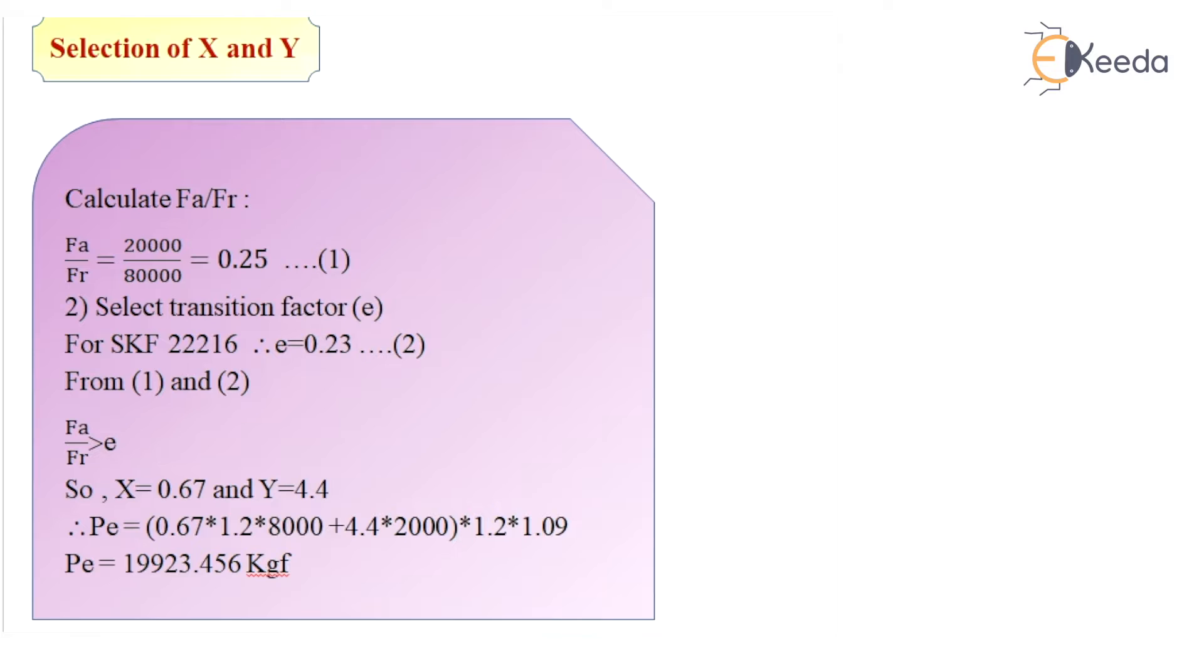So I get the value as 0.25 and if I find out the transition factor, that is e, for SKF 22216, that is e is equal to 0.23. From these two values of FA/FR and the value of transition factor e, we can find that the ratio of FA and FR is greater than e. So from PSG we get X is equal to 0.67 and Y is equal to 4.4.